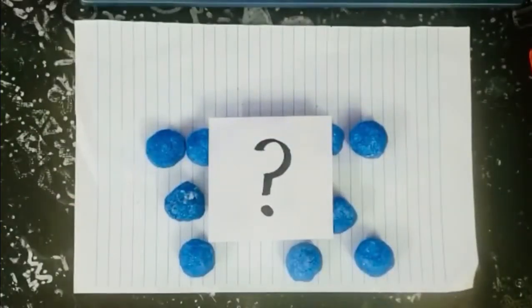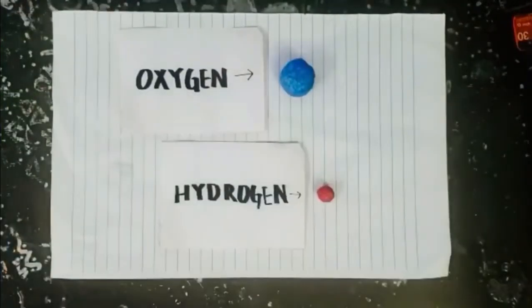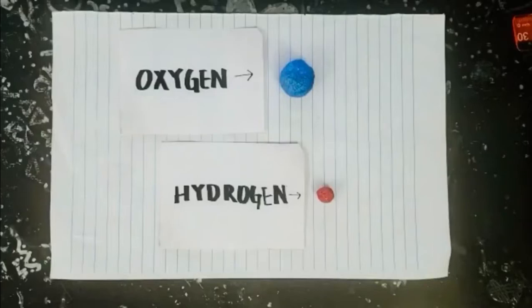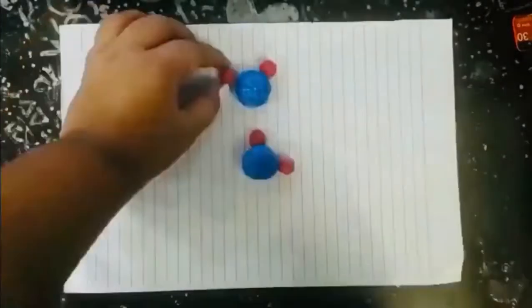To understand this, we need to go to the very basic atomic structure of water. Water comprises of two atoms, oxygen and hydrogen, and they are bonded as shown in the video presentation.